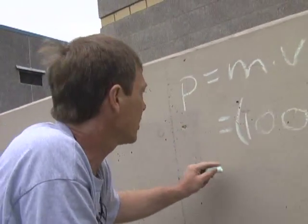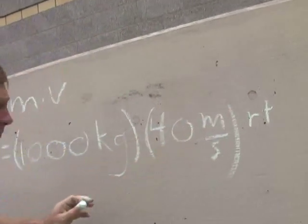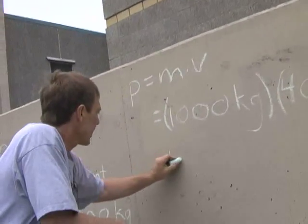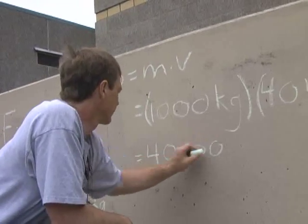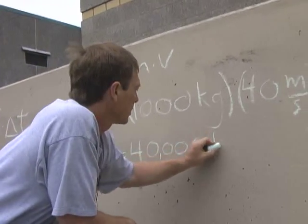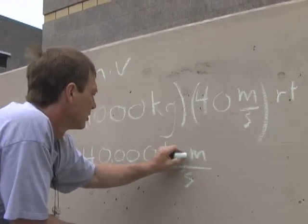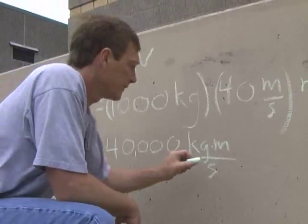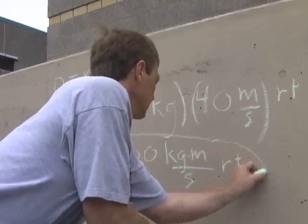And then when I come up with this answer, I've got to have a right there because that's the direction it's going. I get 40,000 kilogram meters per second to the right.